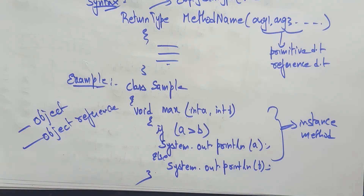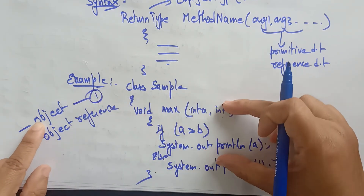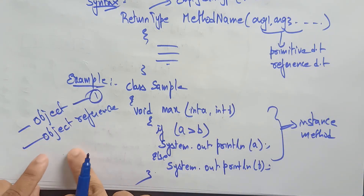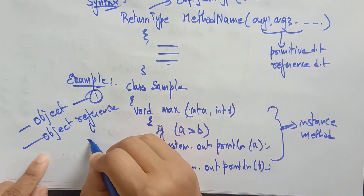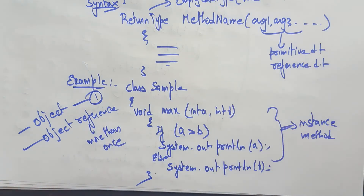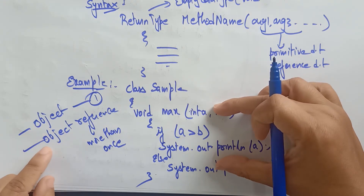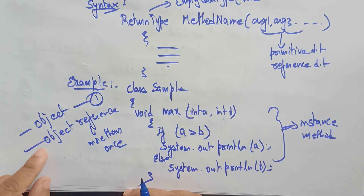When to use an object and when to use an object reference: if you want to access this instance method only once, go with an object. If you want to access this instance method more than once — for example, calling maximum with 25, 30 and then with 46, 28 — then go with an object reference. I try to recall these concepts every video so they become familiar to you.